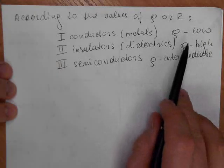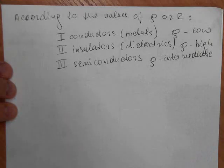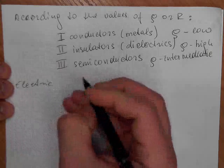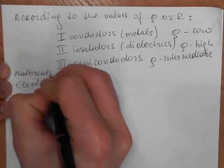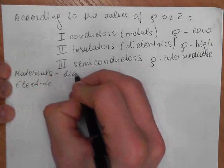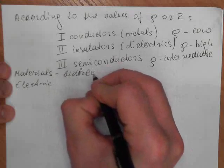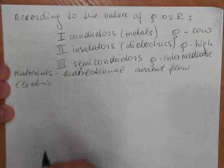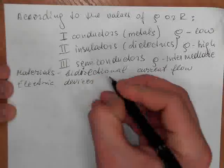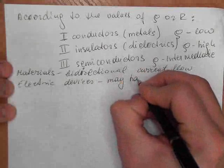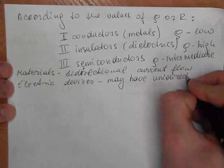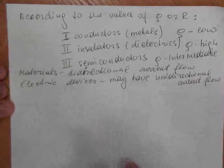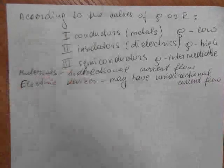All materials have bidirectional current flow. Electric devices, however, may have unidirectional current flow. These are not materials but devices — like a diode. A light bulb is a device that still has bidirectional current flow, but a diode does not.